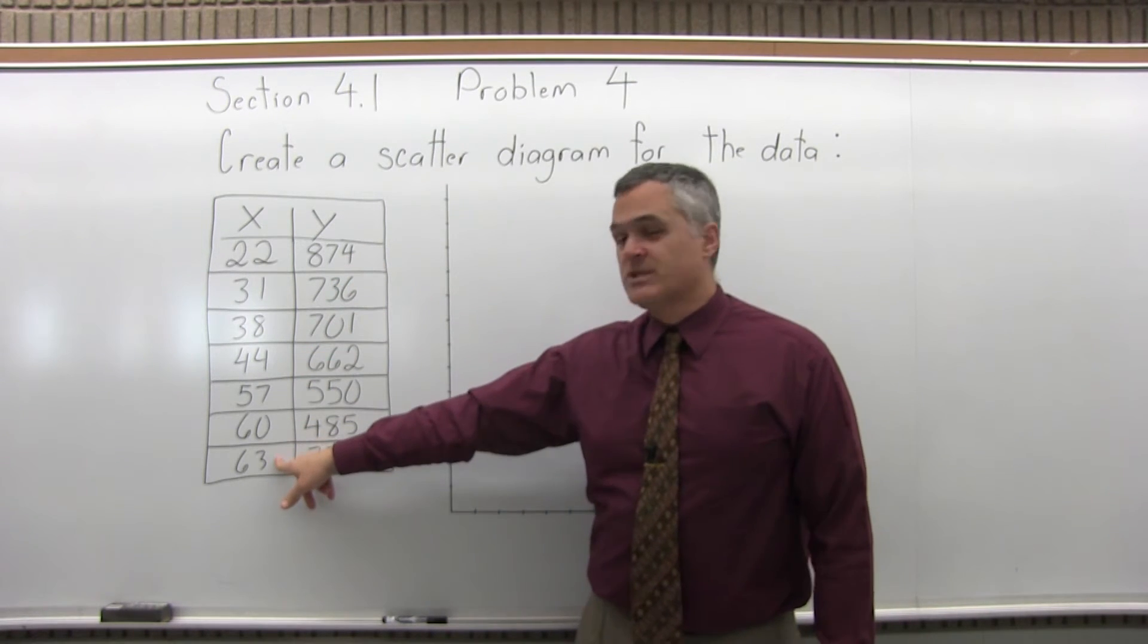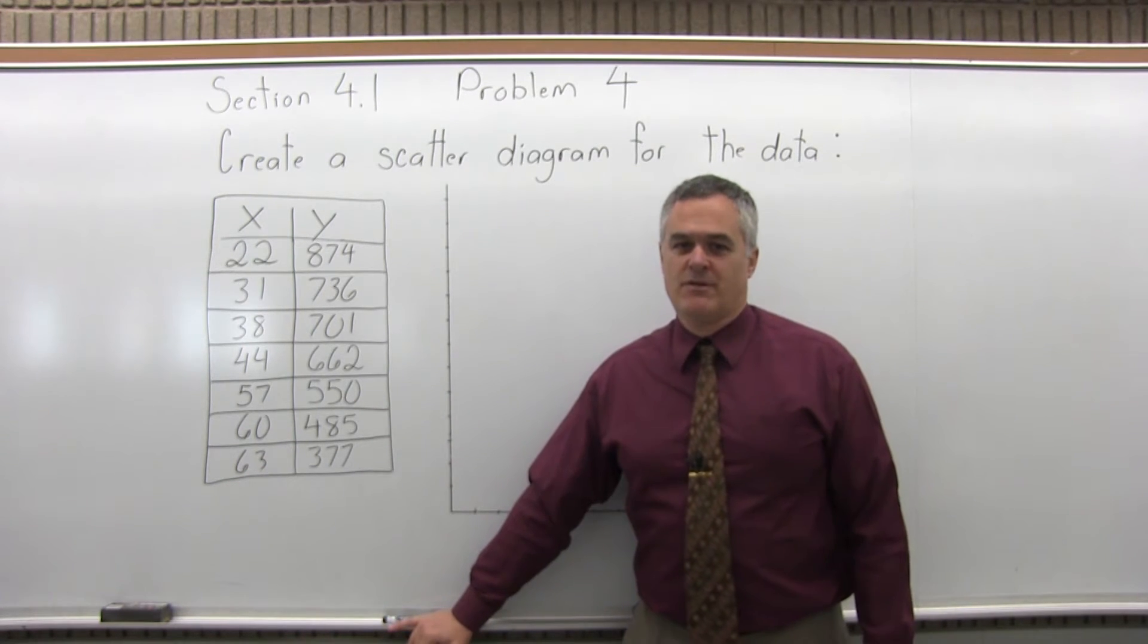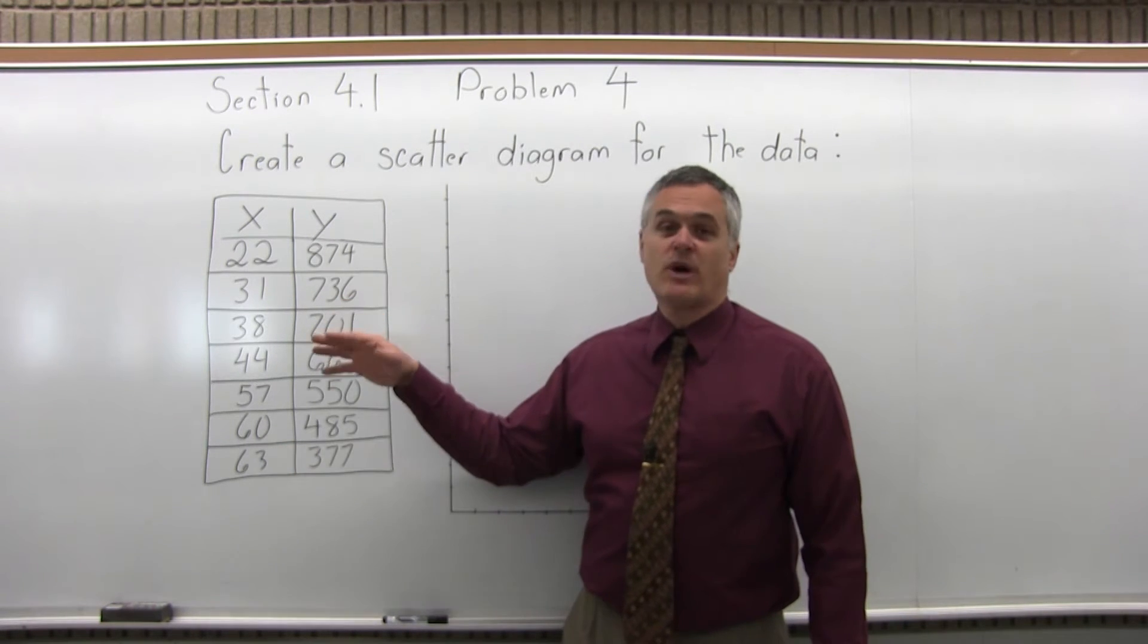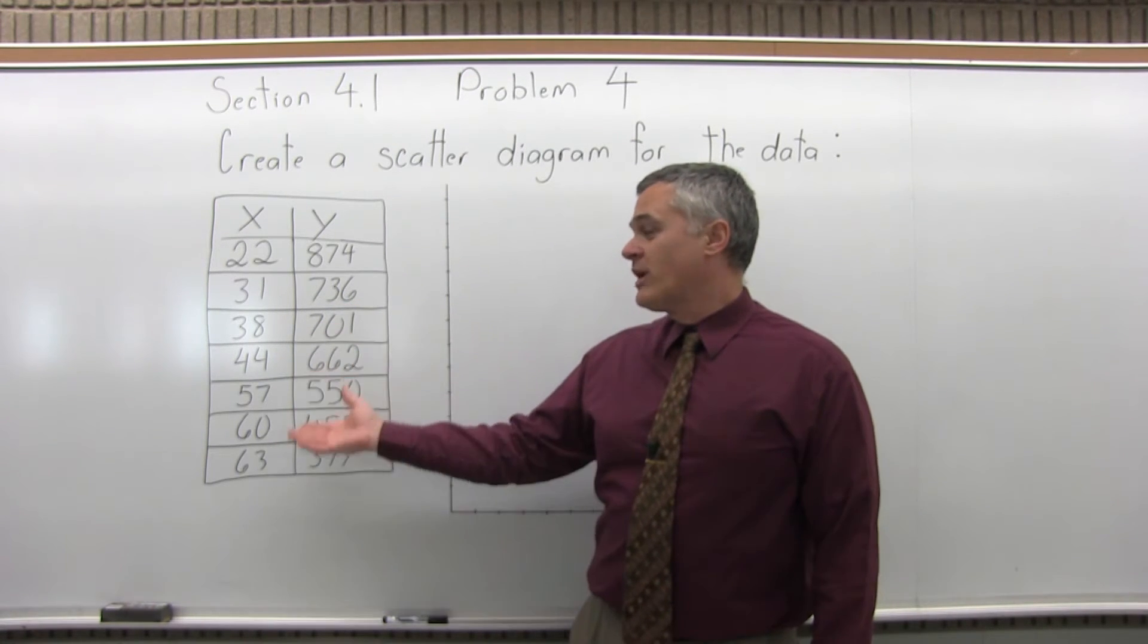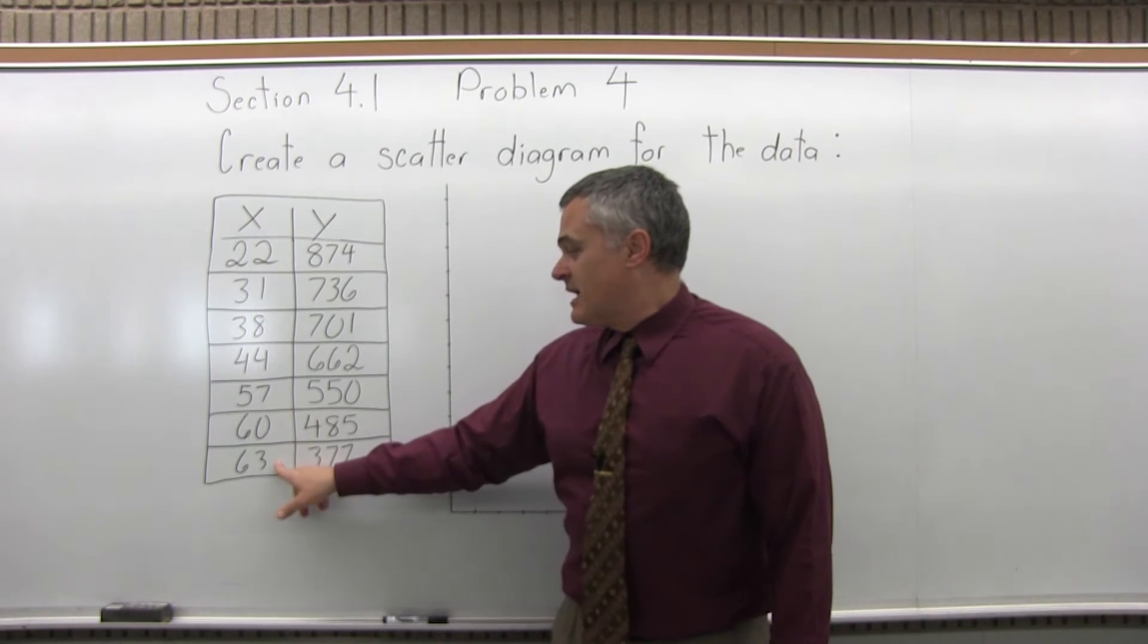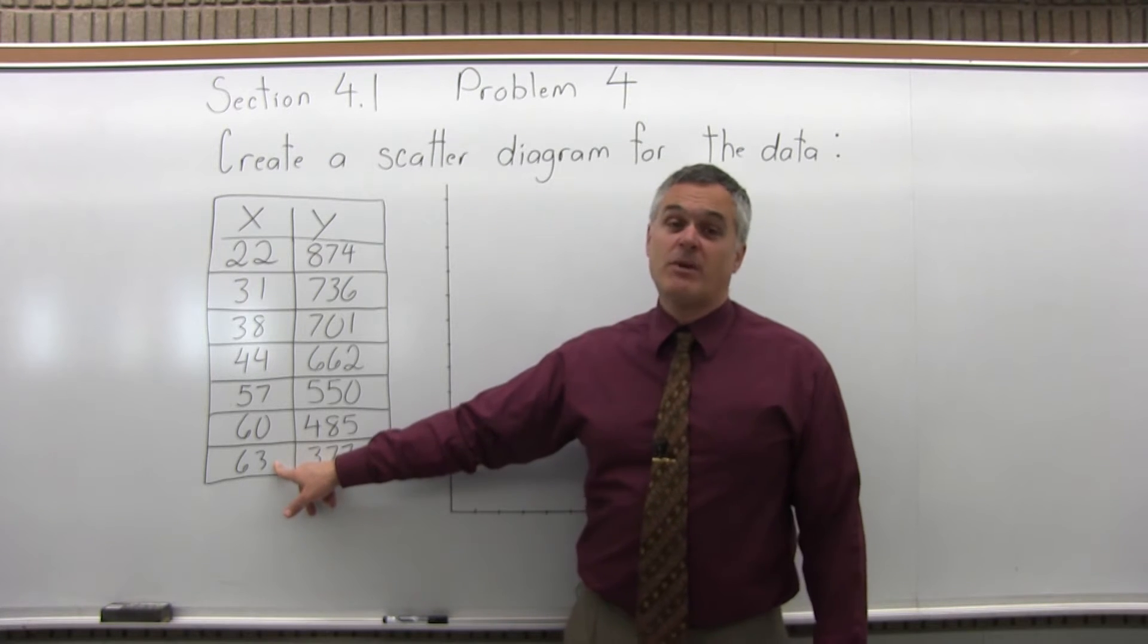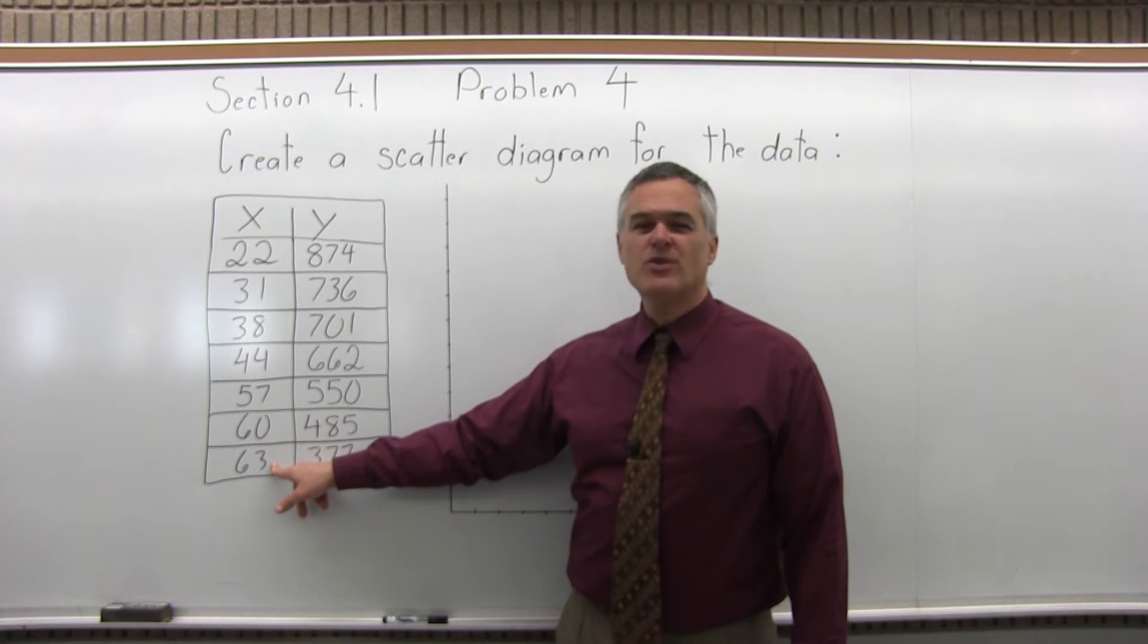So for the X's, the biggest number is 63. Typically I like to have somewhere around 10 lines for my graph. So the other thing too is the X's and Y's don't have to run on the same interval. As long as they're labeled clearly, the X's could run one at a time, 10 at a time, 5 at a time, different from the X's. So for the X's, if I have, for a 63 I could go by 10's, I'd need 6 or 7 lines, which wouldn't be bad. By 5's, 12 lines would get me up to 60. So either one is pretty good.